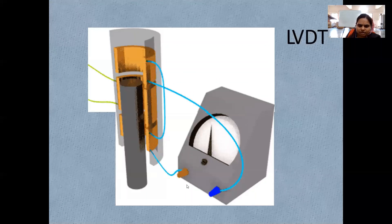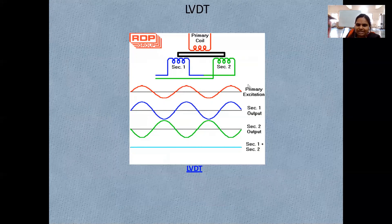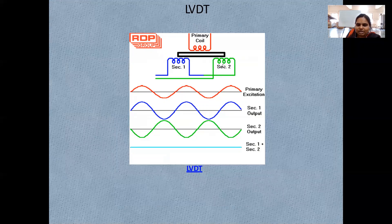In the LVDT circuit, the needle deflects based on the core movement. The core moves towards one direction or another within the winding. With primary excitation, when the core is towards secondary winding S1, that secondary gets a signal output, and the second secondary gets the reverse of the first. When you add these two you get a null balance.